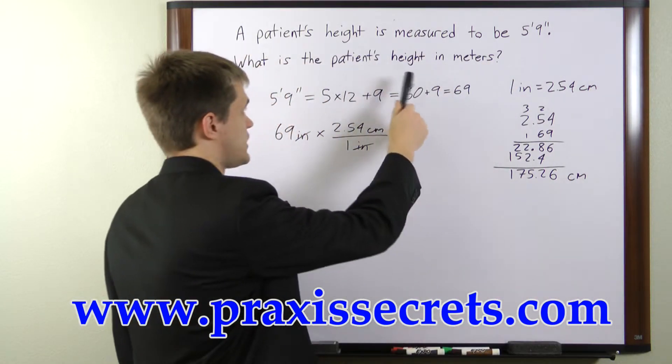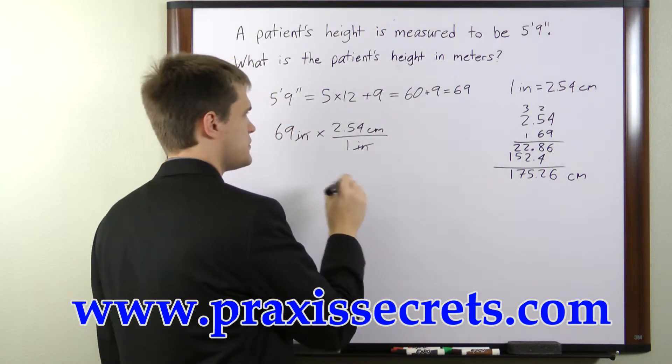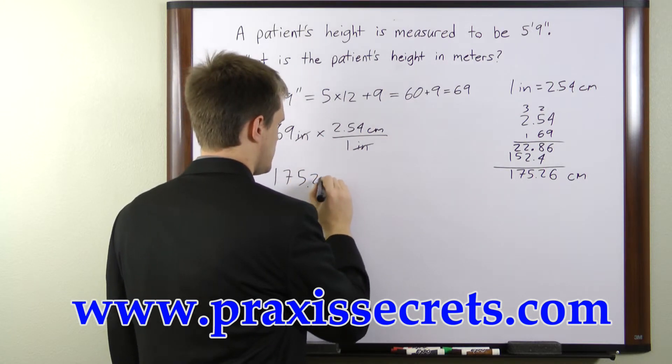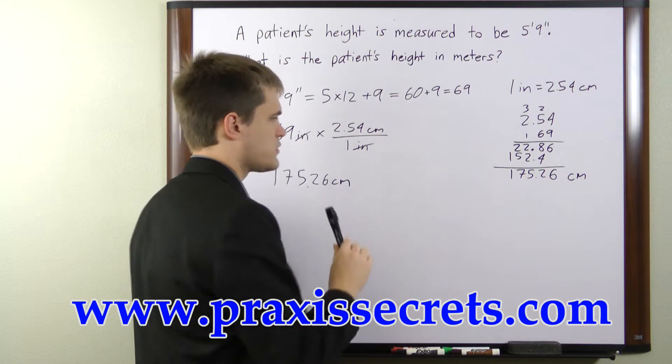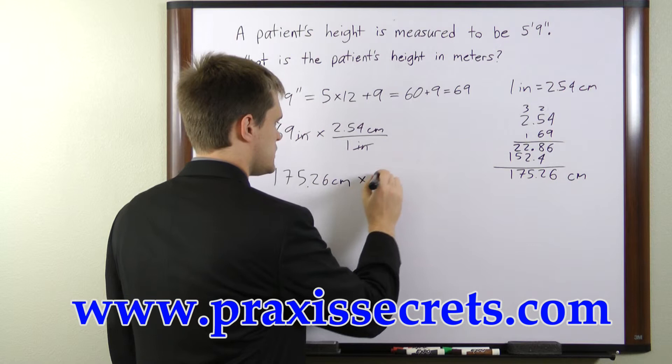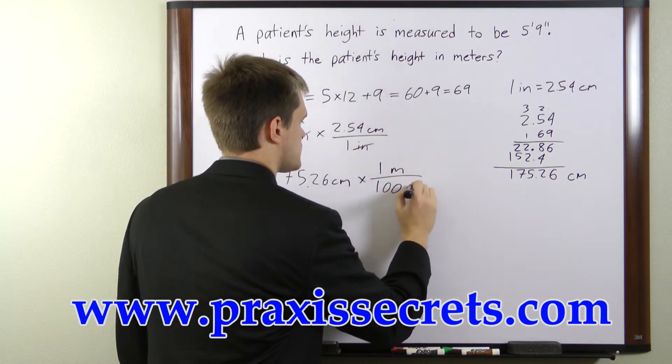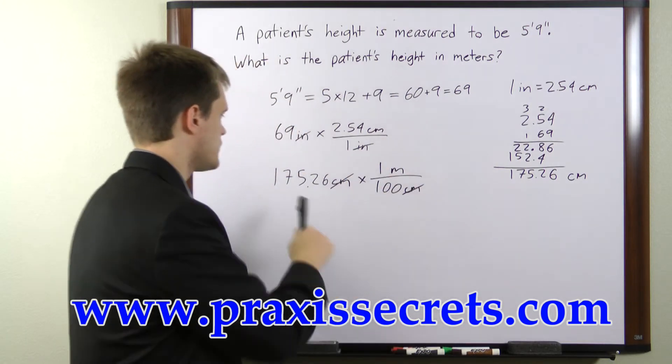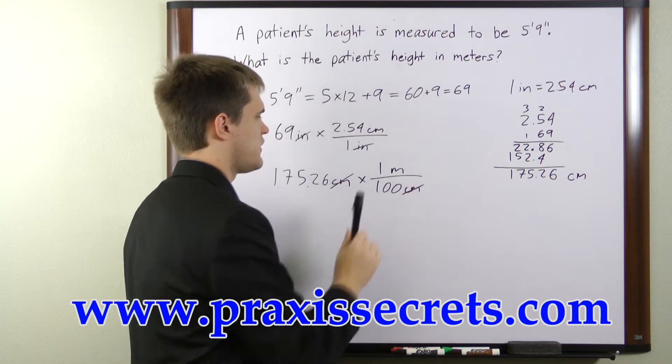Now we're asked for the patient's height in meters so to convert from centimeters to meters we need another conversion factor. There are 100 centimeters per meter so we'll multiply the number of centimeters times 1 meter per 100 centimeters. The centimeters will cancel and what we have is 175.26 times 1 meter divided by 100.